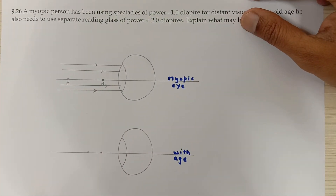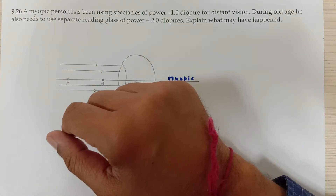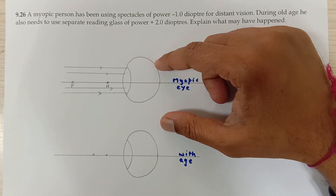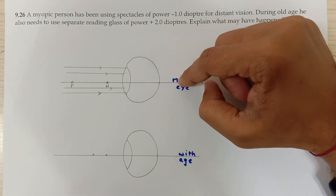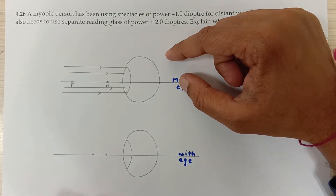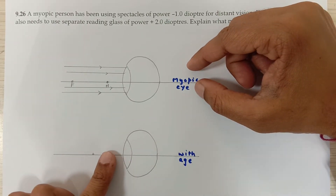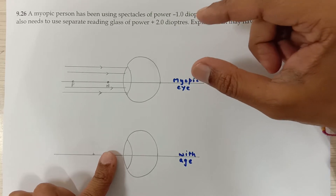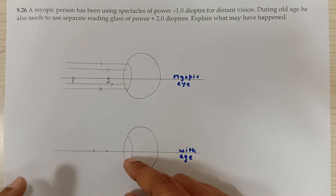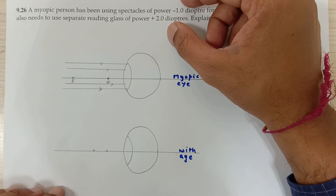Today I'm going to discuss problem number 9.26, grade 12 physics, NCERT textbook, ray optics. This is a beautiful problem in which a person was already suffering from myopia — nearsightedness — meaning he could not see far away objects. As he grew old, he also could not see nearby objects, so the doctors gave him spectacles with both focal lengths to correct both conditions.